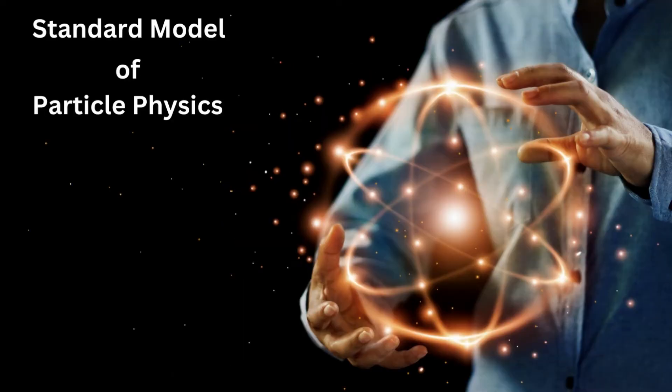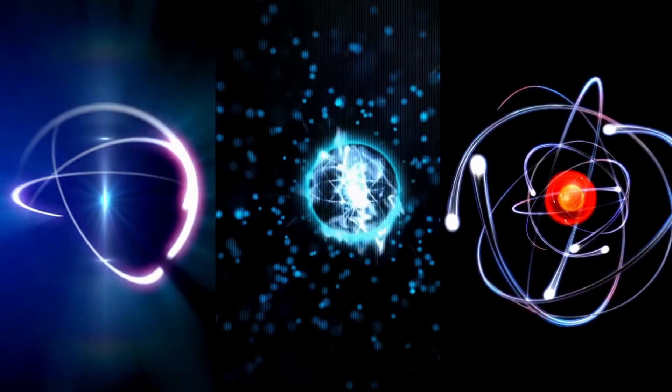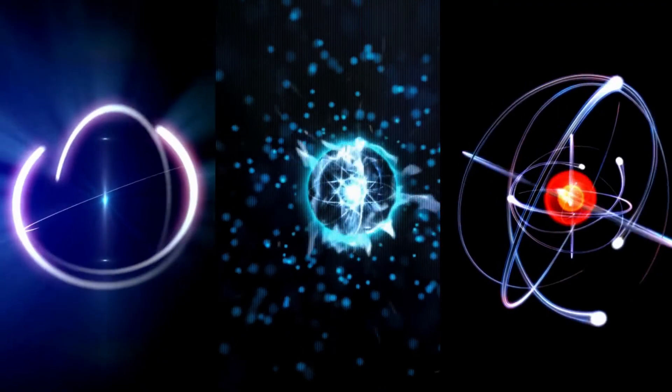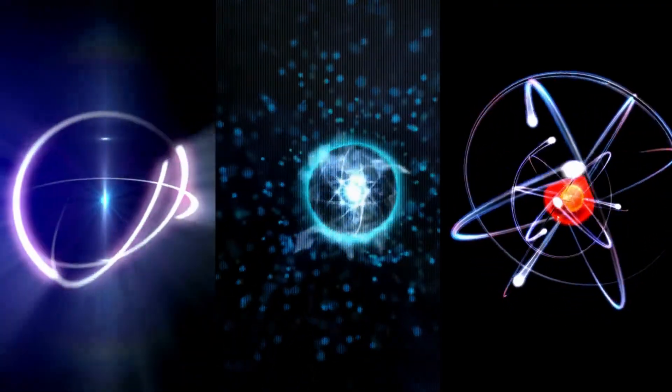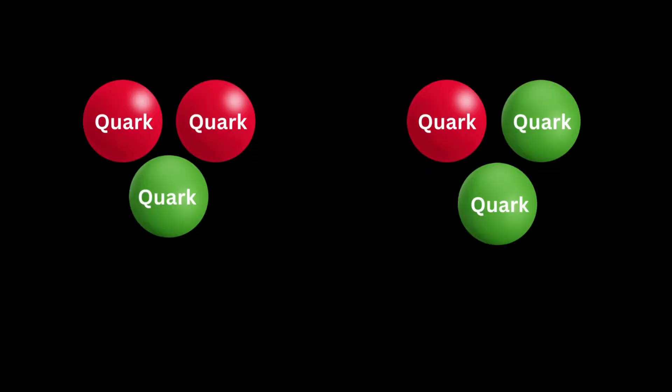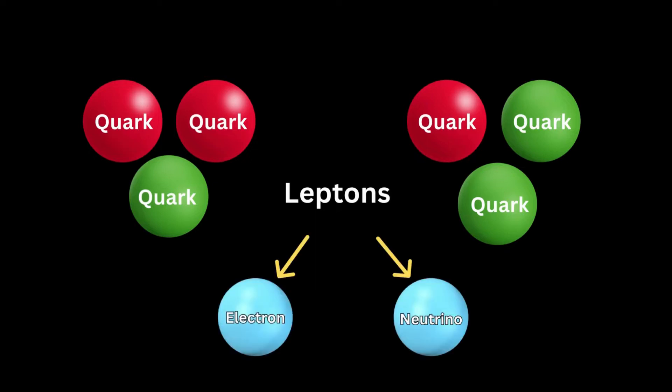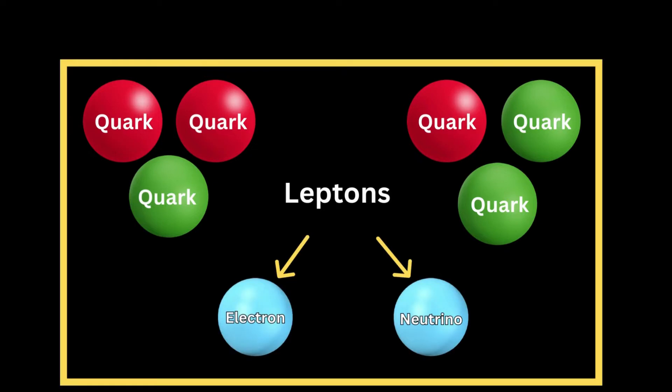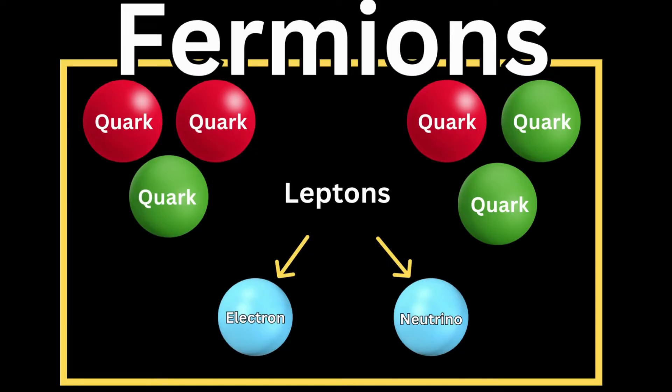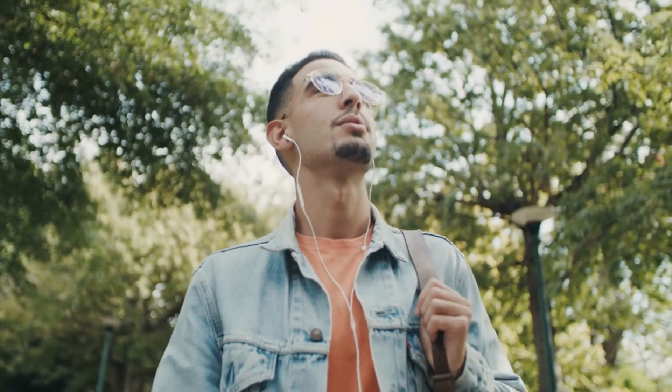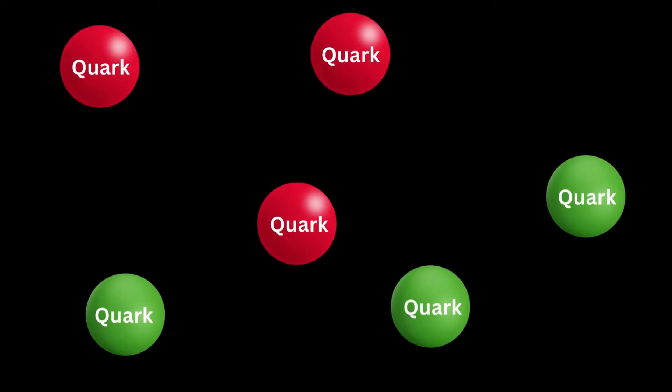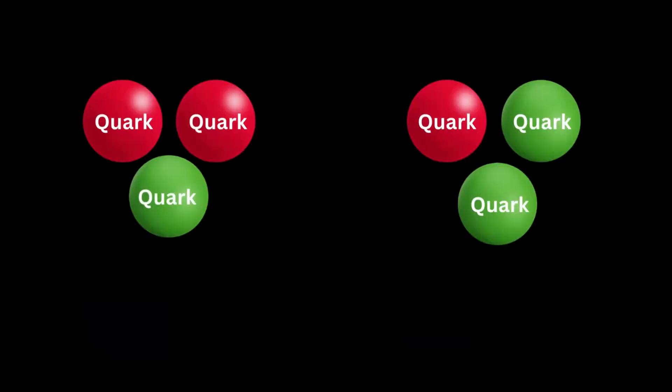The standard model of particle physics, which explains the basic fundamental particles and their interactions, indeed includes quarks together with leptons such as electrons and neutrinos. They are categorized as elementary fermions. Fermions are a group of particles that form the basic elements or building blocks of matter.